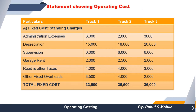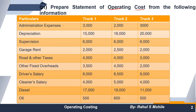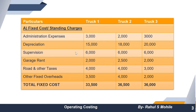In the statement of operating cost, the first part is the fixed cost, called standing charges. Looking at the question, we identify administration expenses and other fixed costs. The amounts for Truck 1 are 3,000, Truck 2 is 2,000, and Truck 3 is 3,000. Items include administration expenses, depreciation, supervision, garage rent, road and other taxes, and other fixed costs — all entered directly with no additional calculation needed.